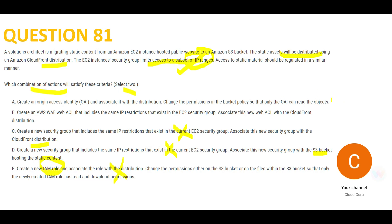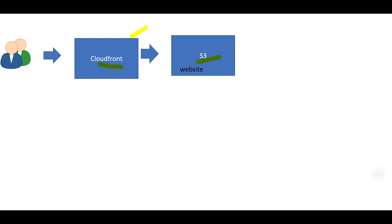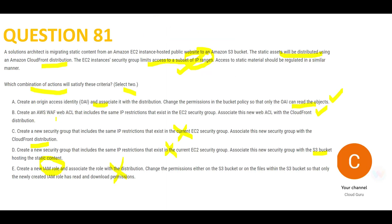Since we need two answers, the first is: create an OAI (Origin Access Identity) and associate it with the CloudFront distribution. Only that OAI can read objects in S3. This means users cannot directly use the S3 URL to access the content — if they try, access will be denied. Only the OAI can read this data, similar to needing credentials or a thumbprint to access a locked phone.